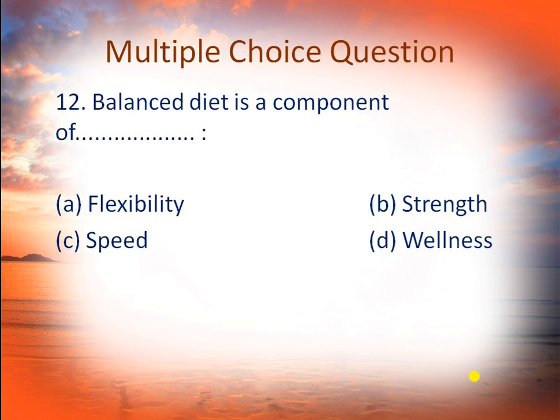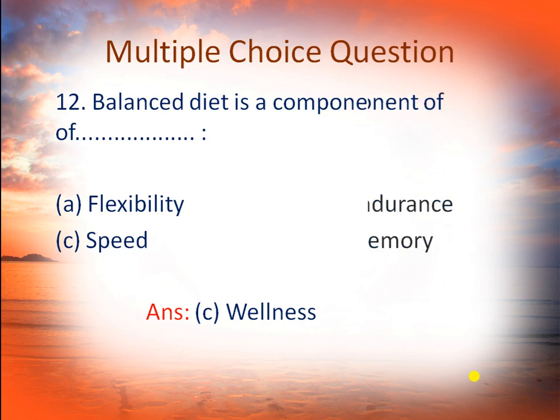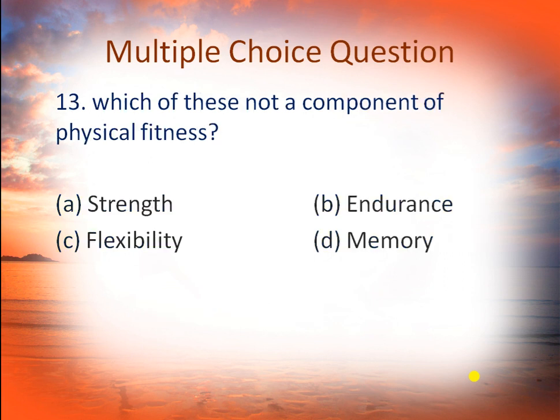The next question is: balanced diet is a component of — option A: flexibility, B: strength, C: speed, and D: wellness. Balanced diet is the component of wellness, so D is the right answer.